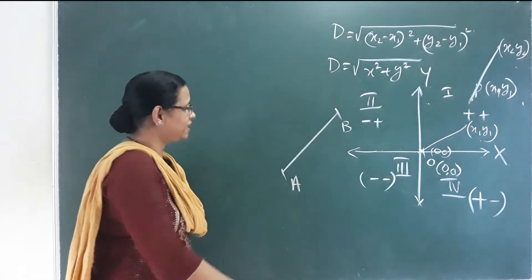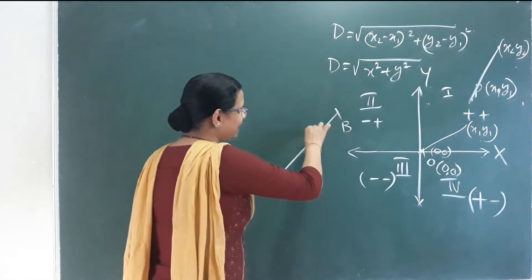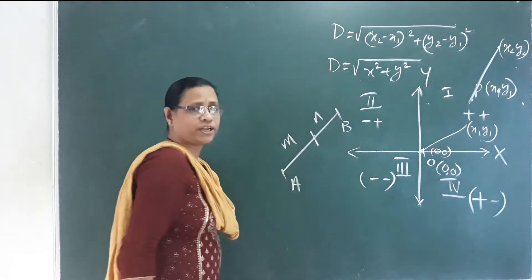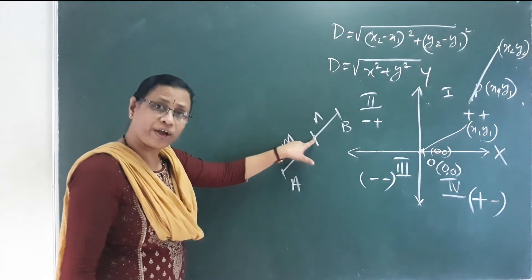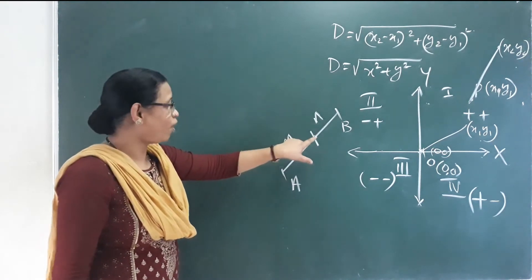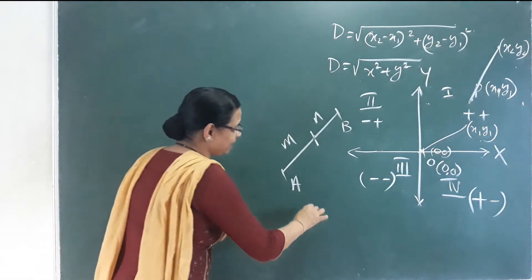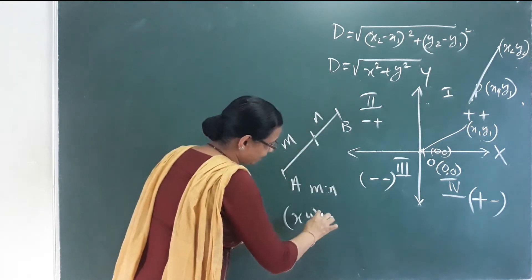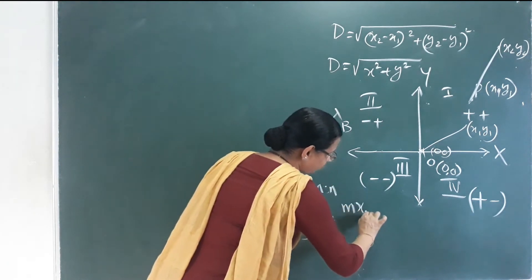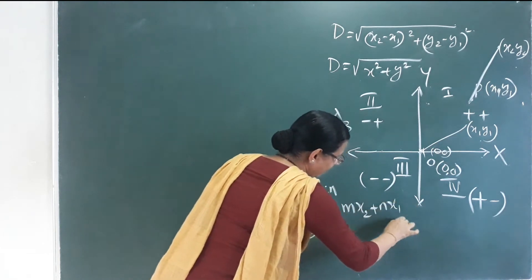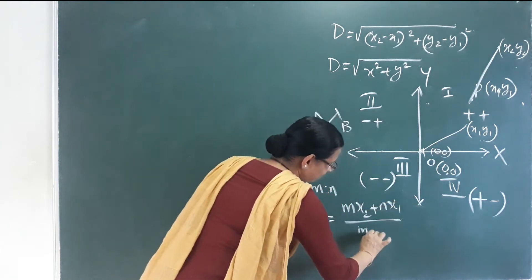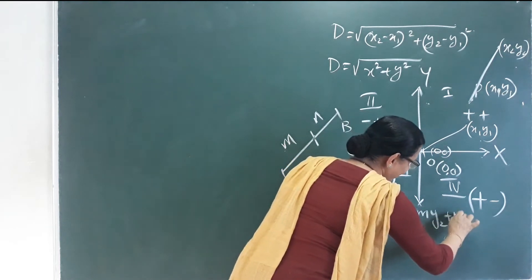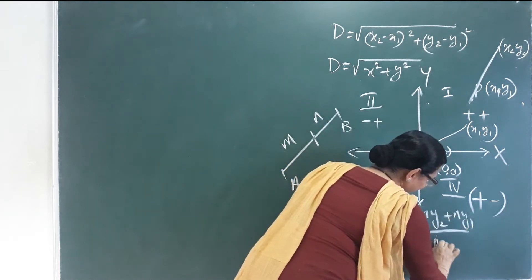There is a point that divides AB in the ratio M to N. How do you find this point? The formula is: x-coordinate = (Mx2 + Nx1) / (m + n), y-coordinate = (My2 + Ny1) / (m + n).